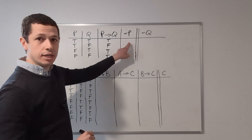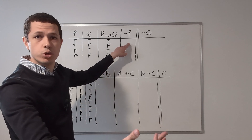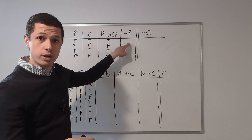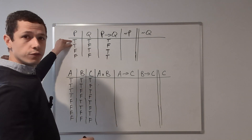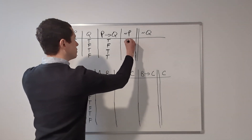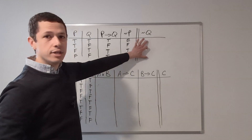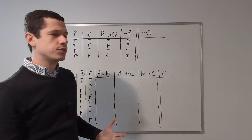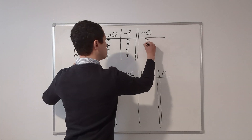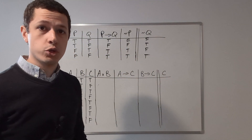Let's move on to the next one — we now have a negation. Negation is easy to calculate: if the atomic statement is true, the negation is false, and if it's false, the negation is true. P is true in the first two rows and false in the next two, so not P is: false, false, true, true. And for not Q — Q is true, false, true, false — so not Q is: false, true, false, true. We've written out the truth table.